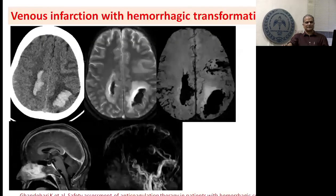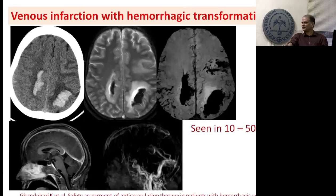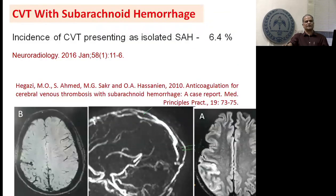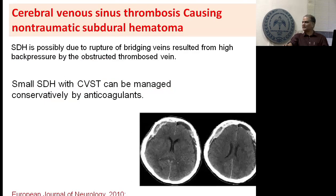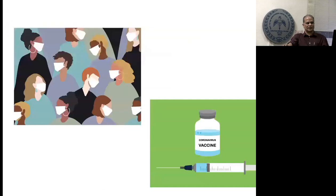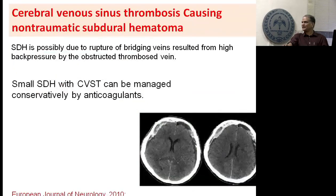Some conditions may cause hesitation about starting heparin. Hemorrhagic transformation of venous infarct is very common — seen in almost 50% of our patients — but there is no doubt you must use anticoagulation. Up to 6% can present with associated subarachnoid hemorrhage — don't hesitate, start anticoagulation. Patients can also present with non-traumatic subdural hematoma associated with CVT — if the hematoma is large, surgical evacuation may be needed first, but small ones can receive anticoagulation directly. CVT is one condition where, despite intracranial bleeding, you still must treat with anticoagulation.